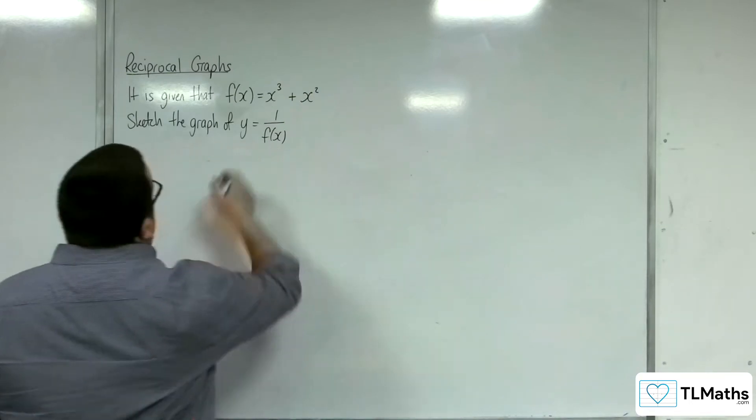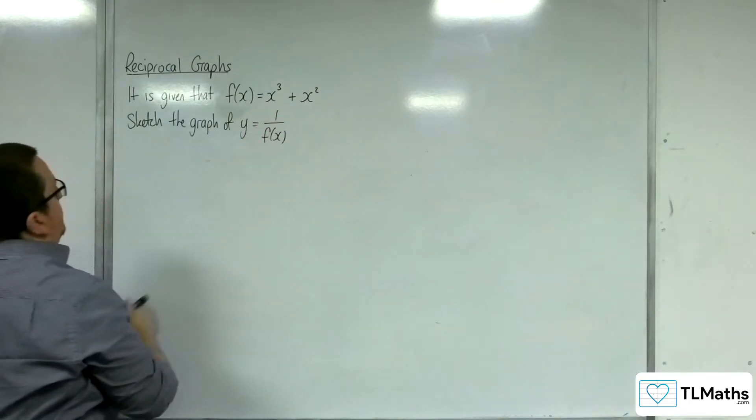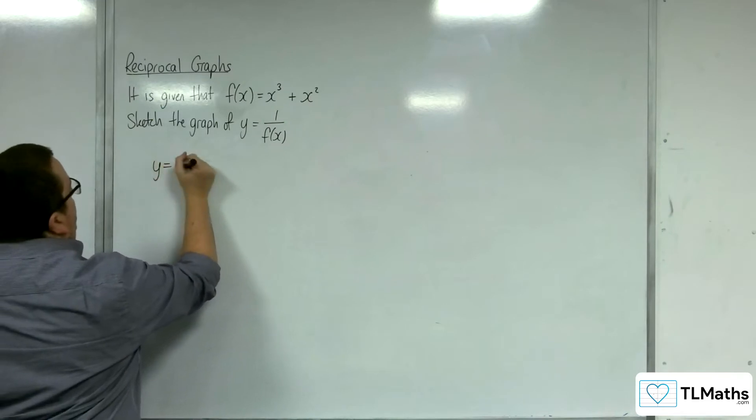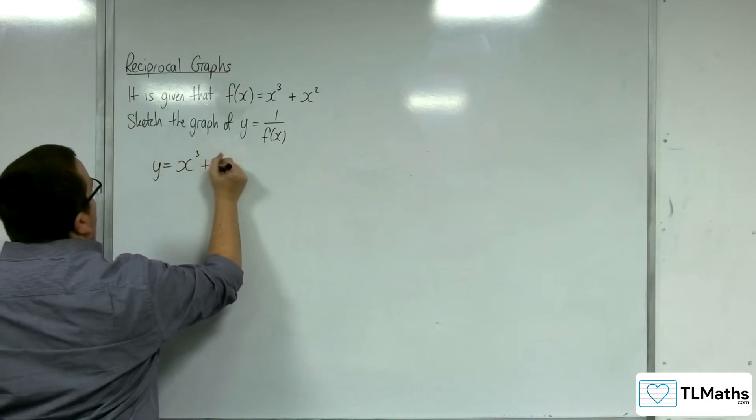So the first thing I'd want to do is work out what this looked like. So y equals x cubed plus x squared.